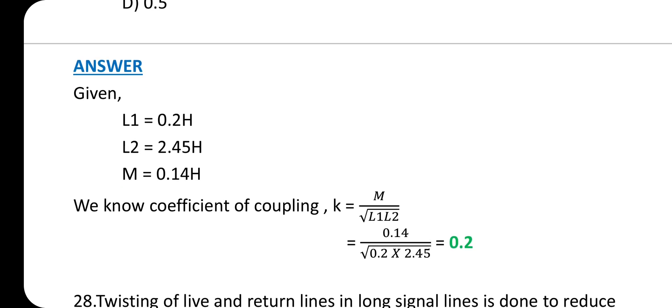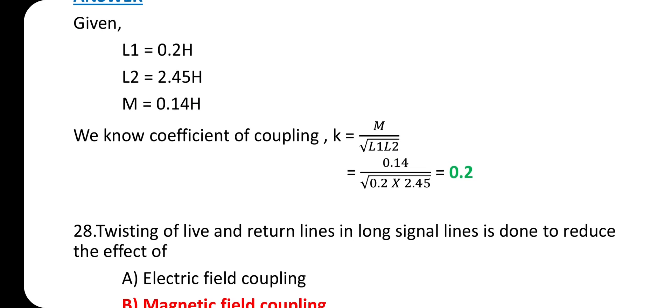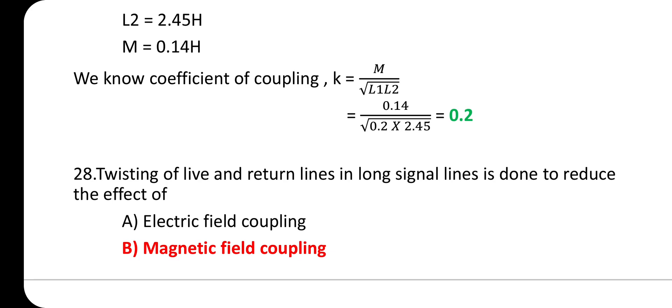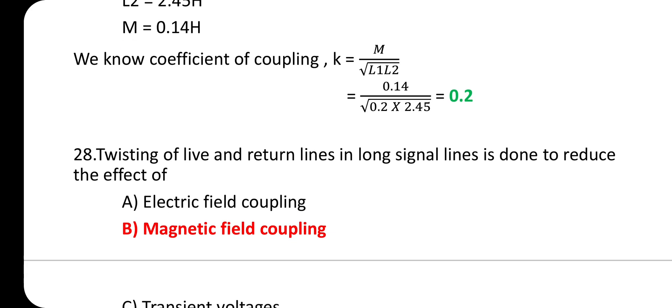In the question: L1 = 0.2 henry, L2 = 2.45 henry, M = 0.14 henry. Using k = M/√(L1×L2), substituting these values gives coefficient of coupling k = 0.2.